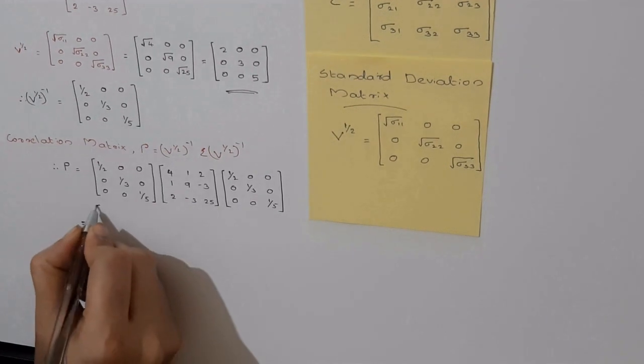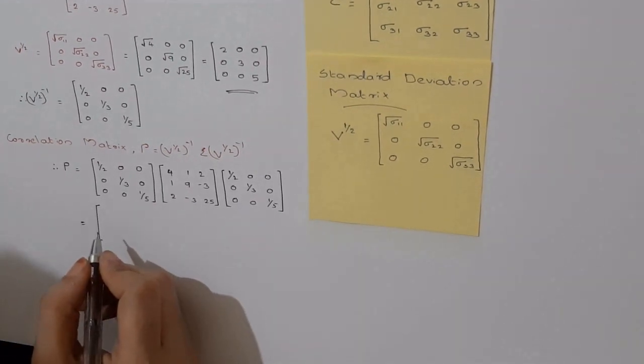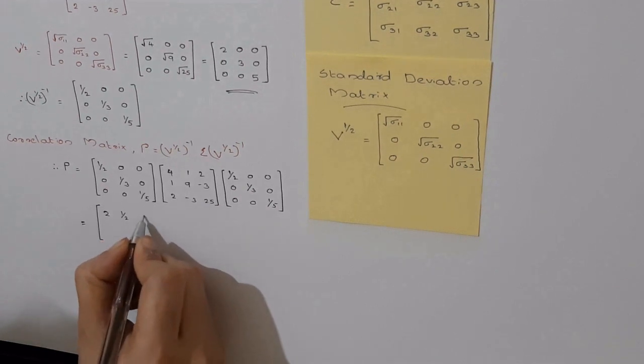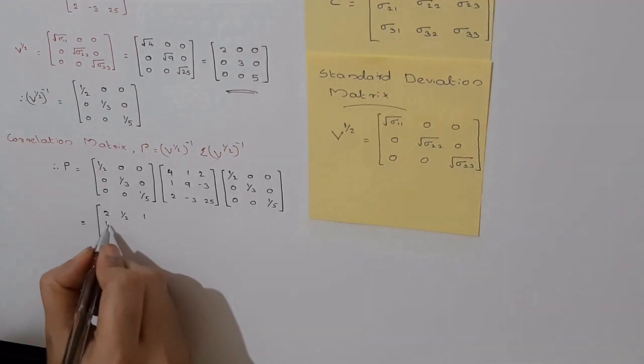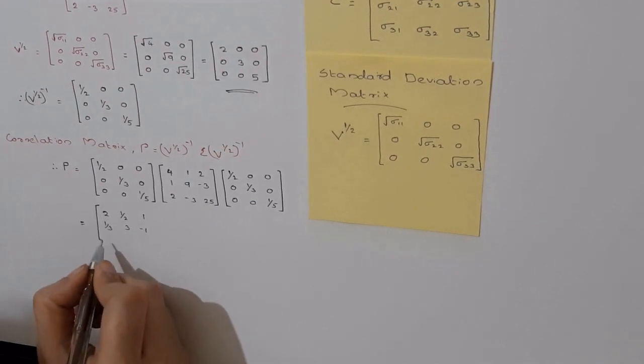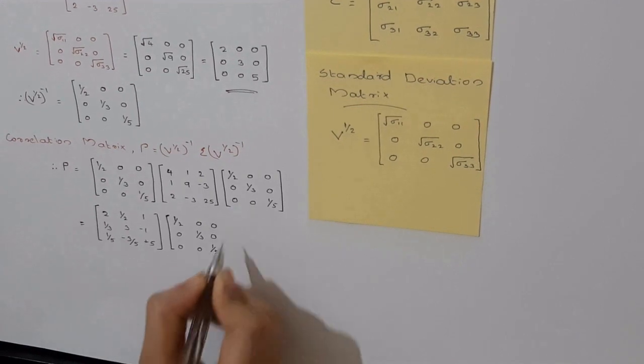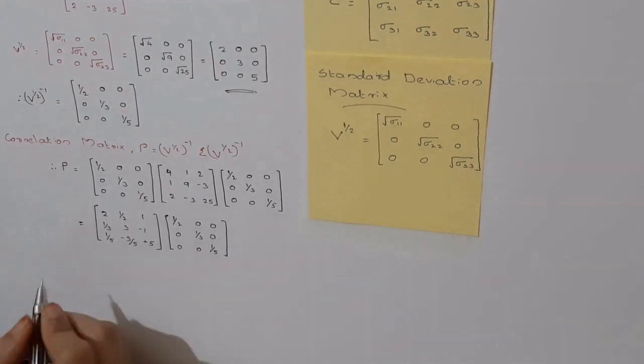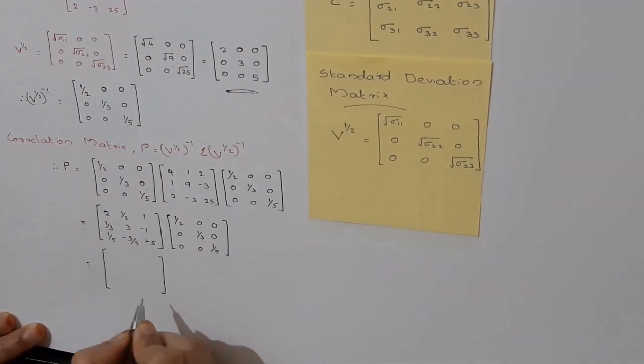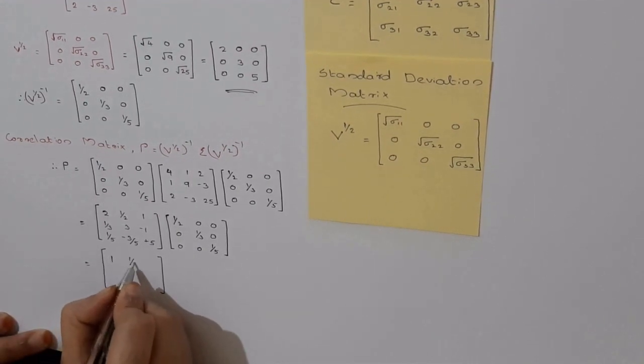Now we will get [2, 1/2, 1; 1/3, 3, -1; 1/5, -3/5, 5]. Then this again multiply with the matrix [1/2, 0, 0; 0, 1/3, 0; 0, 0, 1/5].